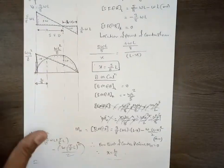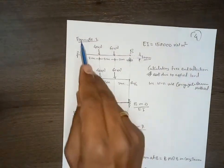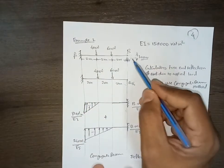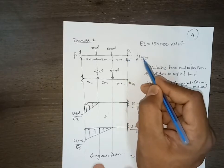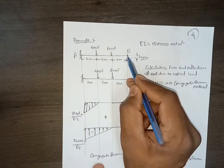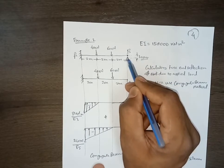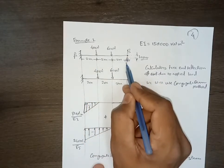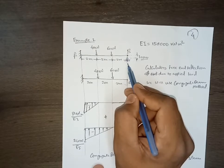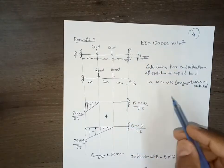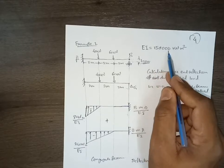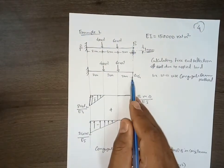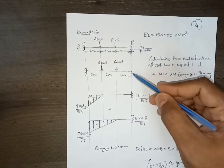Now we'll look at Example 2 — a cantilever beam with two point loads: 40 kN and 60 kN. There is a gap of 10 mm between the free end and the support. If the free end deflects more than 10 mm due to the loads, it will touch the support and a reaction develops there; otherwise, there is no reaction at point B. EI is given as 150,000 kN·m². First, we calculate the free-end deflection assuming no support.